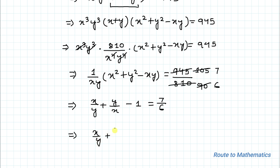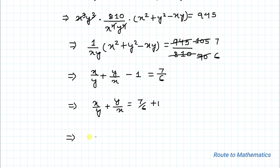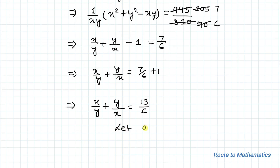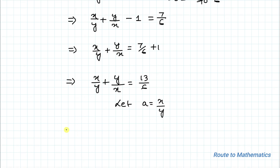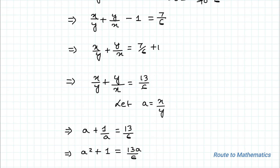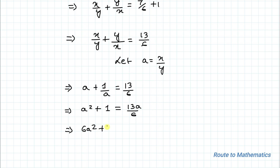This implies x/y + y/x - 1 = 7/6, so x/y + y/x = 7/6 + 1 = 13/6. Let's take a = x/y, so our equation becomes a + 1/a = 13/6. Taking the LCD we get a² + 1 = 13a/6, which gives 6a² - 13a + 6 = 0.